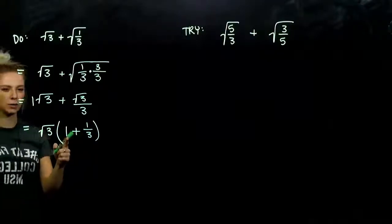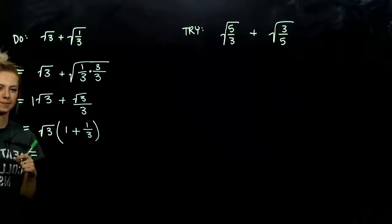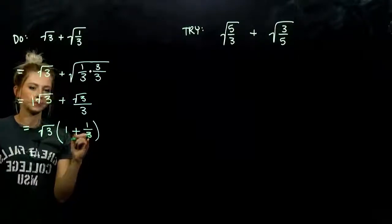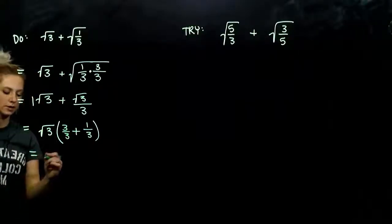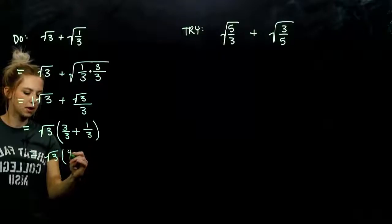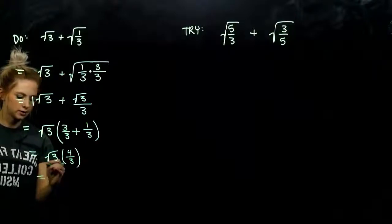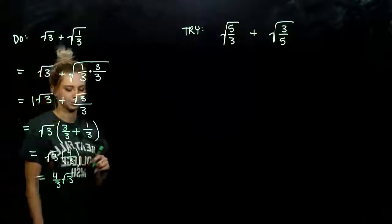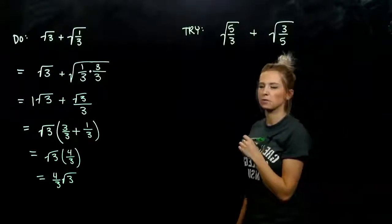What do we need in order to combine these two? We need common denominators. So how else could we represent 1 with a denominator of 3? I need to multiply it by a factor of 3 over 3. So how many factors of root 3 do I have? I've got 4/3. Typically, we write the coefficient on the front so we don't have to write parentheses indicating it's not contained within the radical.